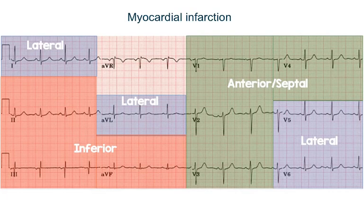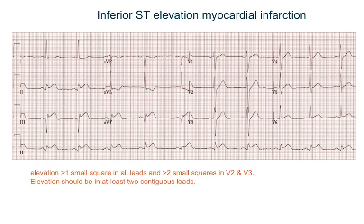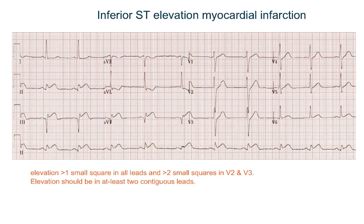Before you interpret the ECG of myocardial infarction, you should know the leads and the area of the heart they represent: lead 1, AVL, V5, and V6 represent the lateral part; leads 2, 3, and AVF are inferior leads; and V1, V2, V3, and V4 are anteroseptal. To diagnose ST elevation MI, the ST elevation should be more than one small square in all leads, except in V2 and V3 where it should be more than two small squares, and it should be in at least two contiguous leads.